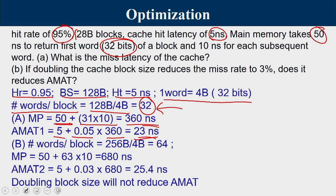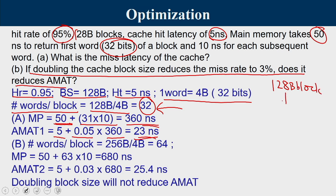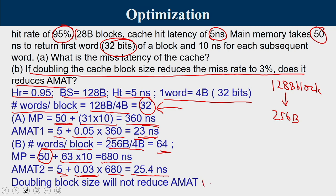For the second part, if we double the block size to 256 bytes, words per block becomes 256 ÷ 4 = 64 words. The new miss penalty is: 50 ns for the first word plus 63 × 10 ns = 680 nanoseconds. The new AMAT is: 5 + 0.03 × 680 = 25.4 nanoseconds. So doubling the block size does not reduce average memory access time; it actually increases it.